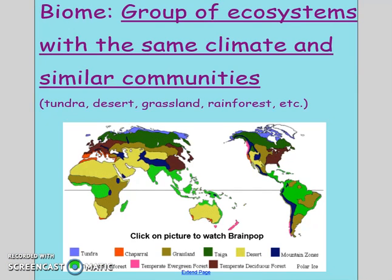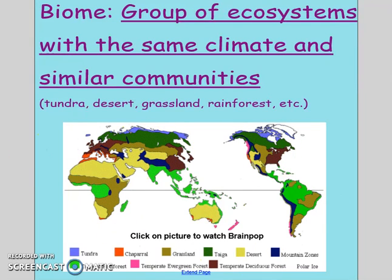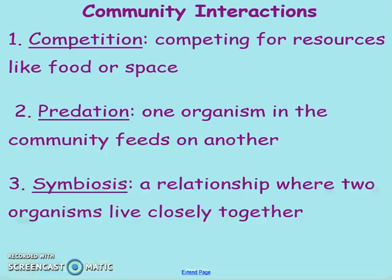If we expand further out to the biome, this is a group of ecosystems that have the same climate and similar communities. Examples of different biomes are the desert, the rainforest, or a tundra. You can see the color coding shows you across the planet where each of these different biomes are.